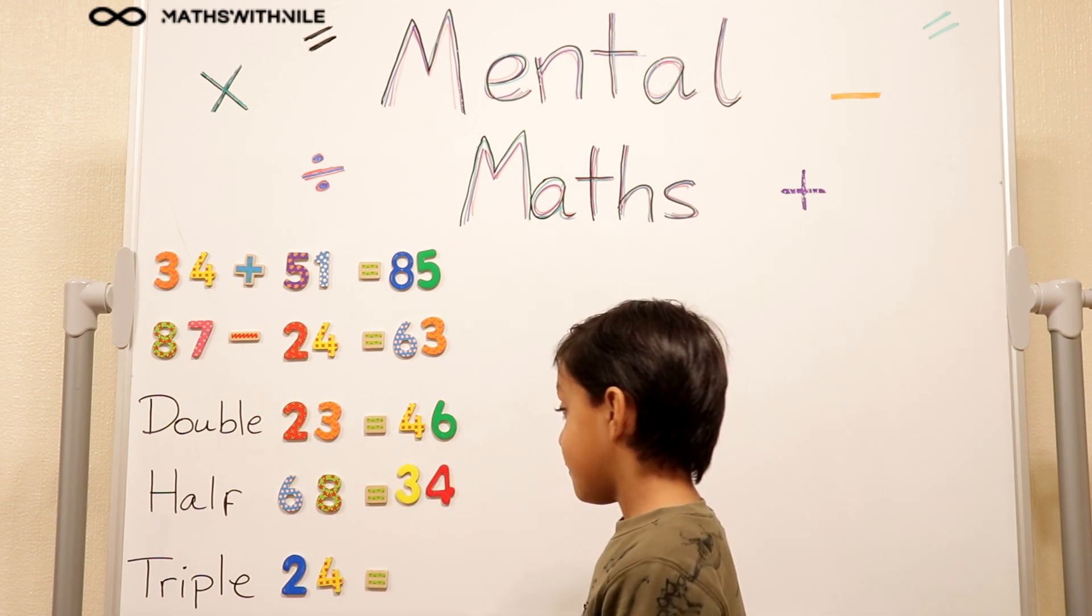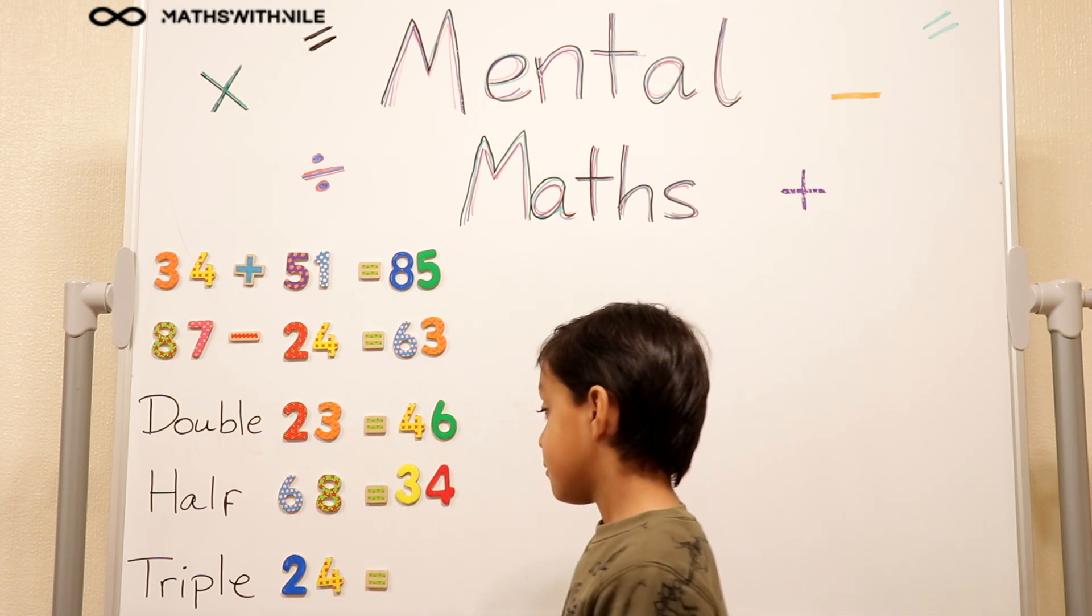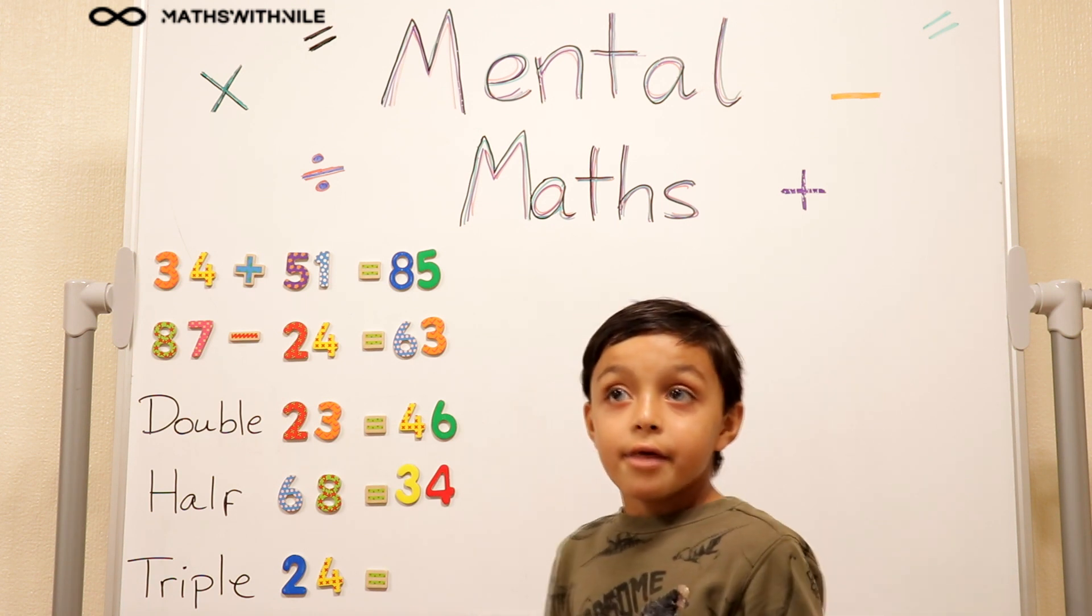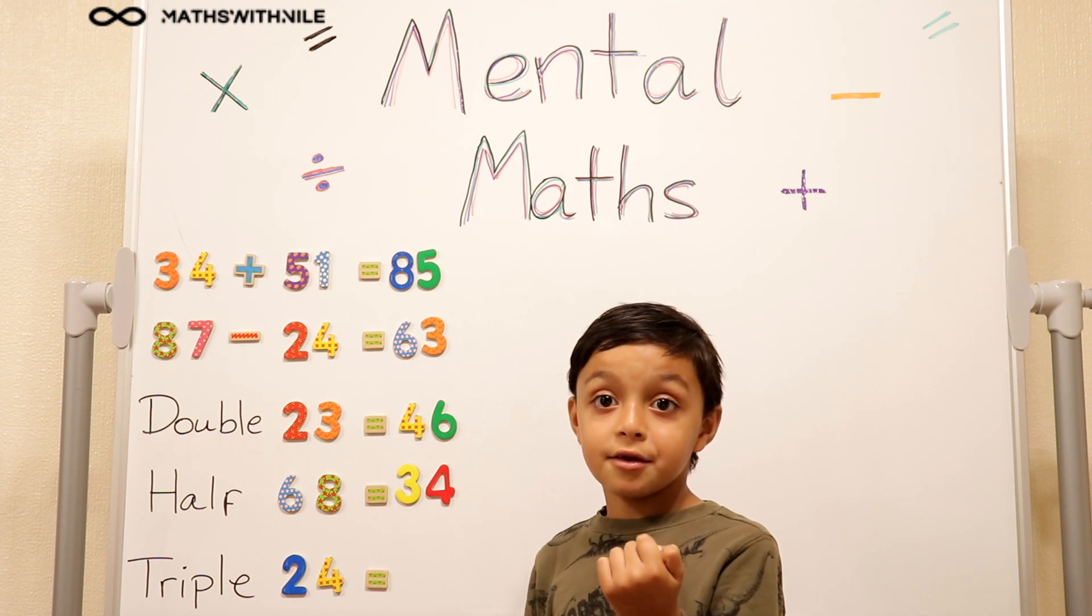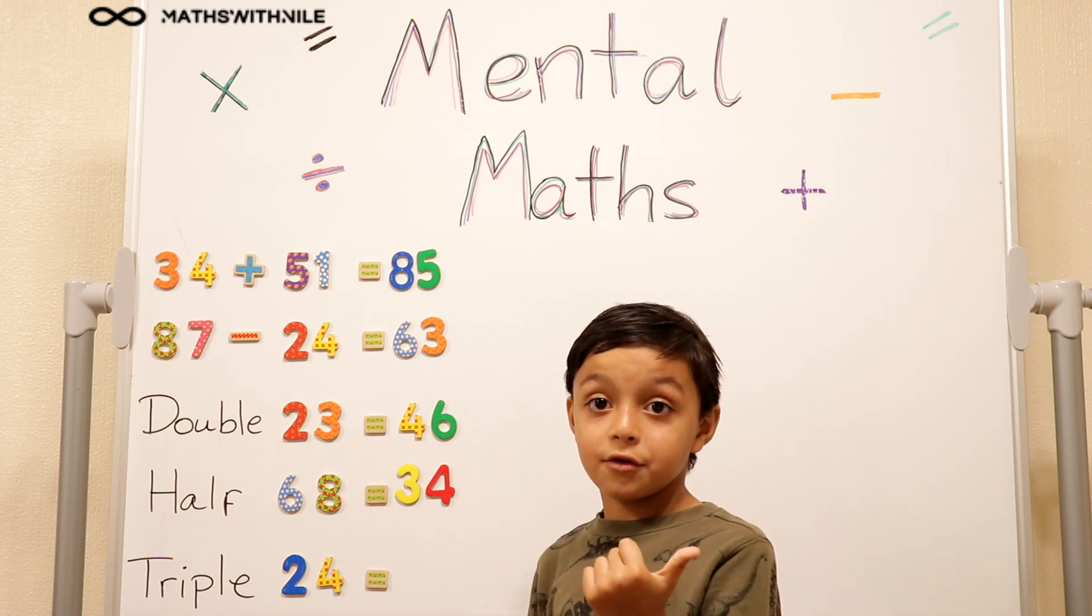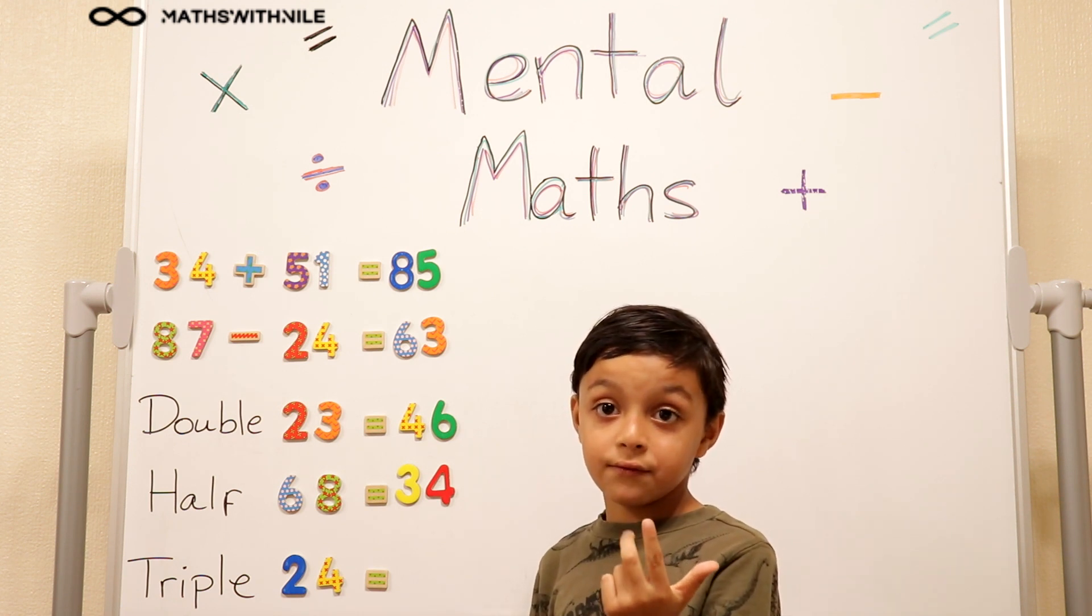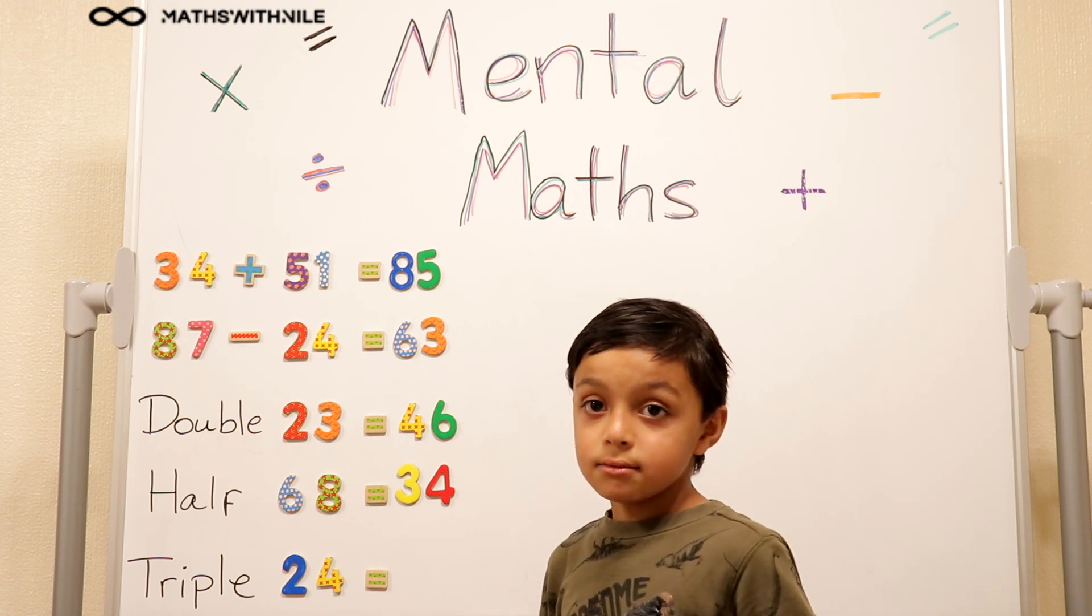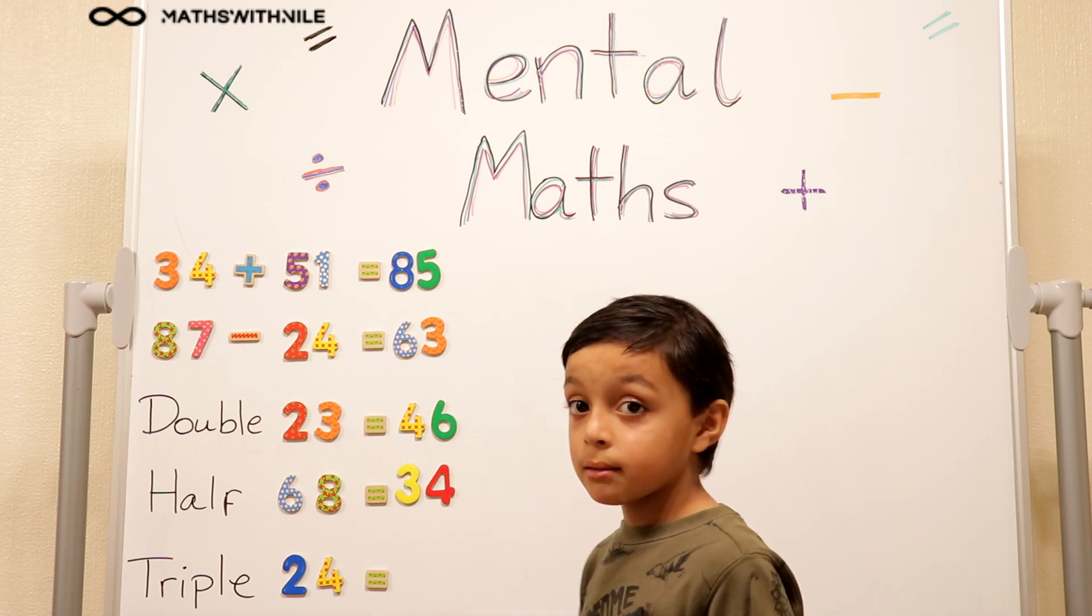And what about that question triple 24? So first we're going to triple 20. Okay. So 20, 30, 40, 50, 60. So triple 20 is 60. Yeah. And then?